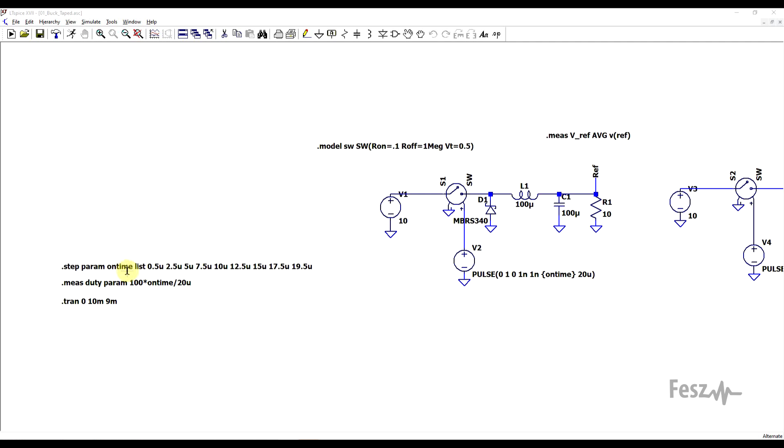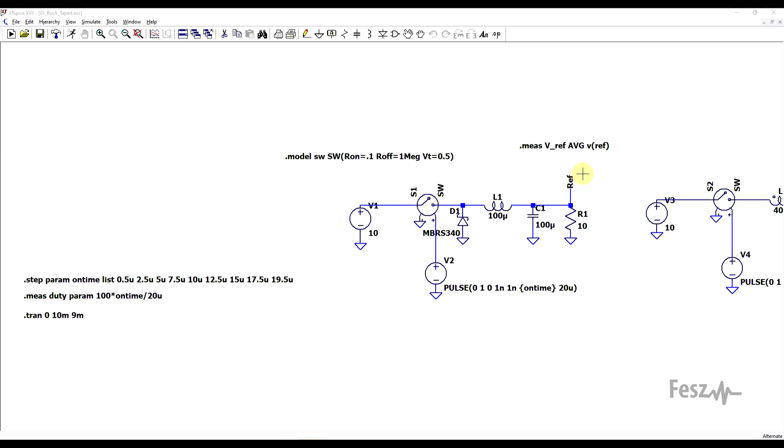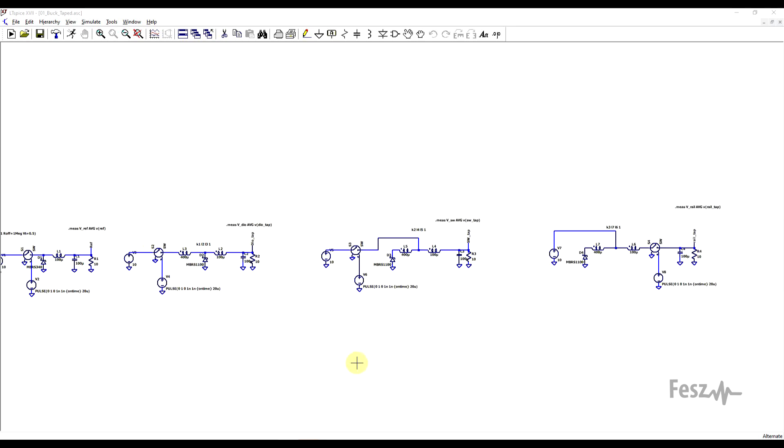So I'm stepping the on time, not the exact duty cycle, but I am calculating the duty cycle as an extra parameter. So this way we should be able to observe the impact of the duty cycle on the output voltage, which is measured using a dedicated measurement statement. So to start off, this was done for the basic buck converter named reference, and then for the other three topologies.